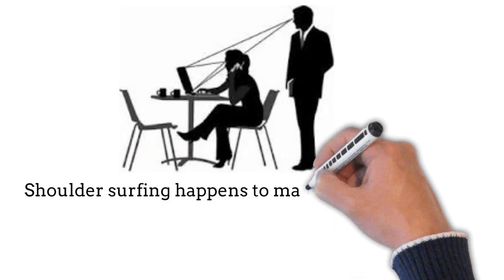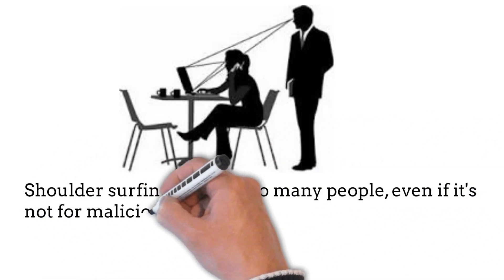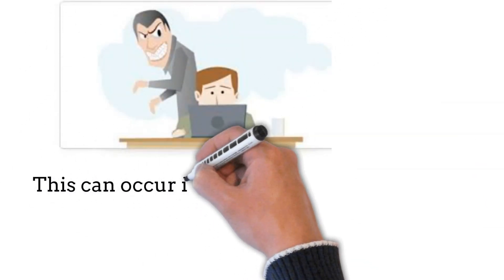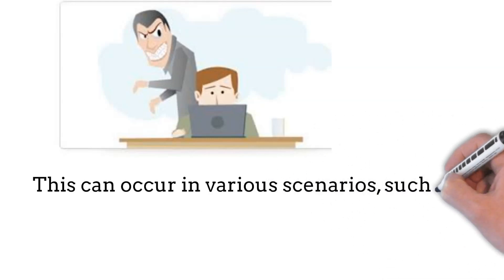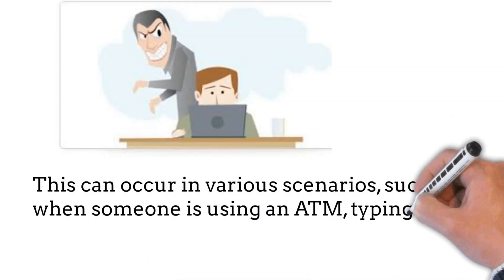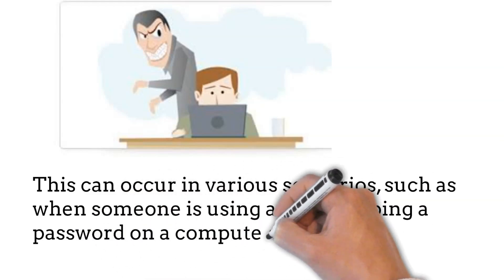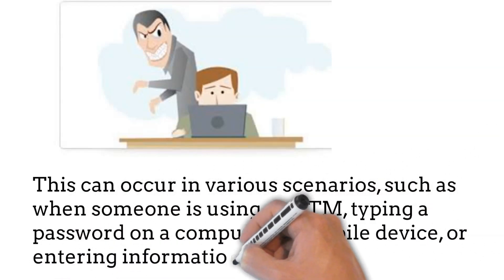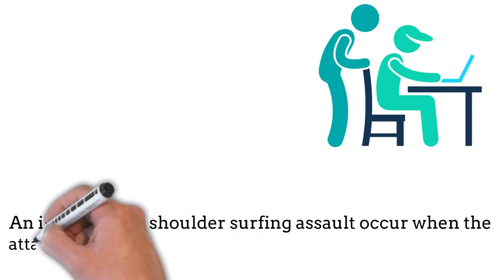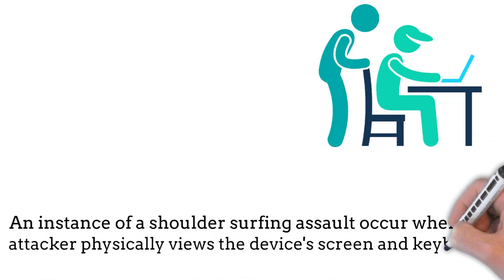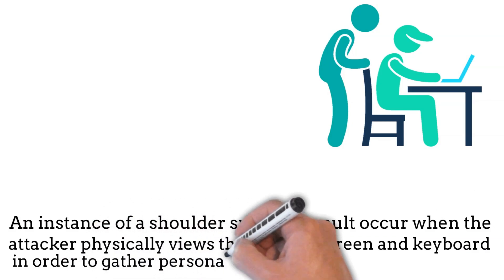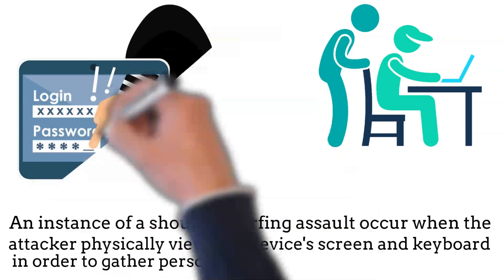Shoulder surfing happens to many people, even when it is not for malicious purposes. This can occur in various scenarios, such as when someone is using an ATM, typing a password on a computer or mobile device, or entering information. An instance of shoulder surfing occurs when the attacker physically views the device screen and keyboard to obtain the person's data.